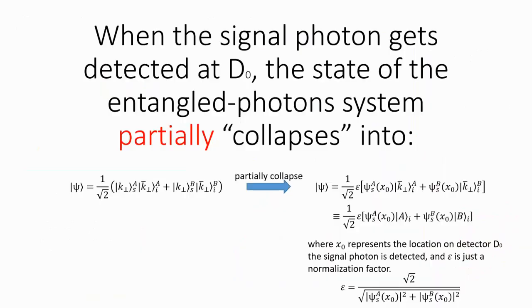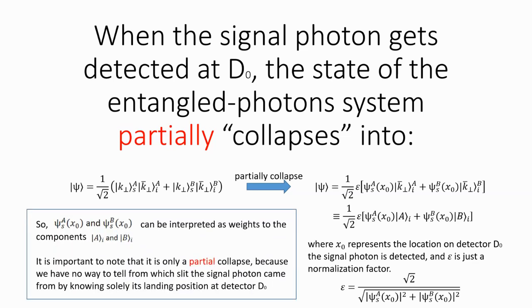When the signal photon is detected, the state of the entangled photons pair partially collapses into... Where X0 represents the landing position of the signal photon on detector D0, and Epsilon is just a normalization factor. So, Psi SA and Psi SB can be interpreted as weights to the component AI and BI.